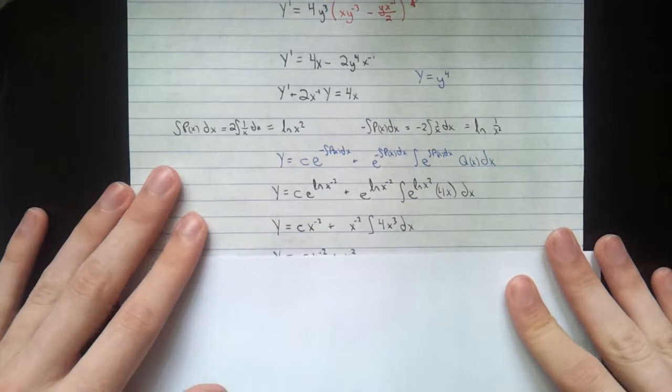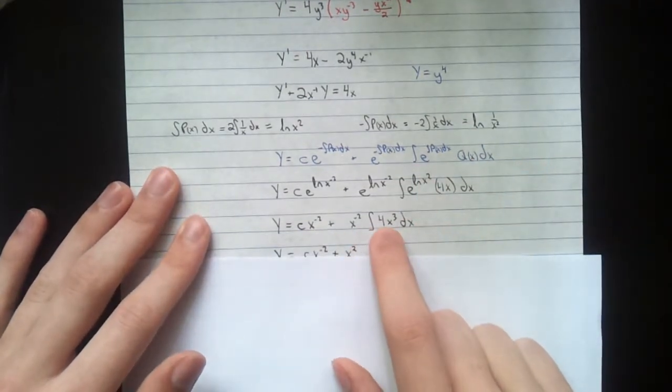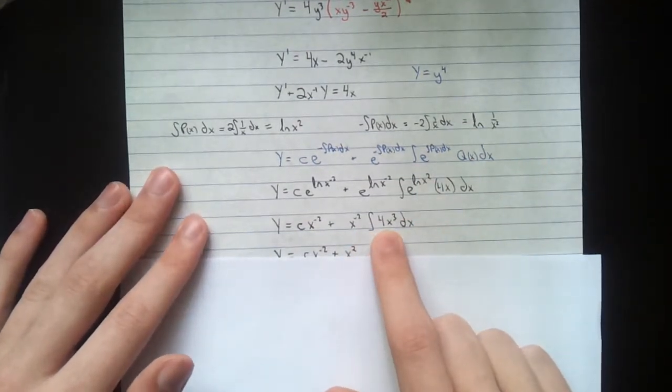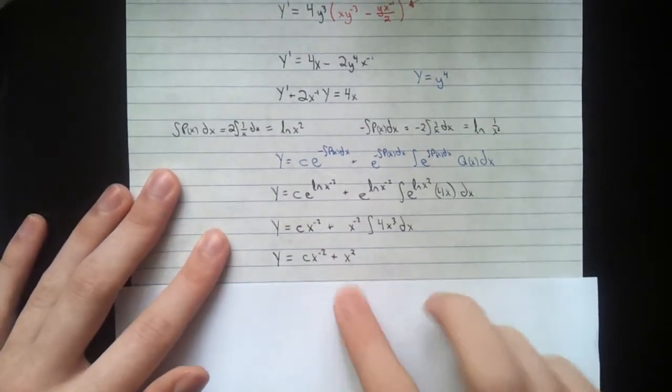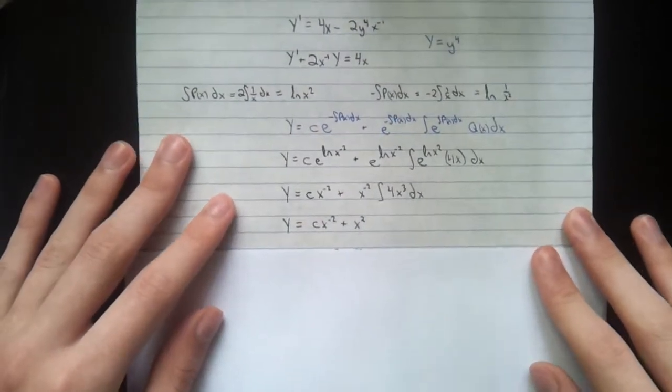And now, we just carry out that integral. This is x to the 4 over 4 times 4. So that's just x to the 4 times x to the negative 2, x squared. And now, the last step here.